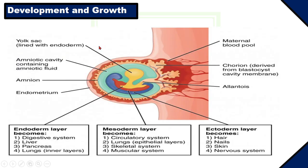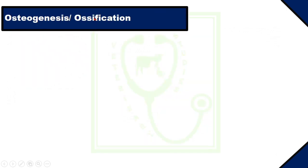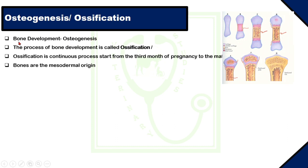This is a picture of an embryo. There are three layers: endoderm, mesoderm, and ectoderm. Different systems or organs are developed from these three layers. For example, the digestive system, liver, pancreas, and inner layers of lungs are developed from the endoderm. The circulatory system, lungs, skeletal system, and muscular system are developed from the mesoderm. Osteogenesis or ossification — osteo means bone, genesis means formation — so bone development is called osteogenesis.